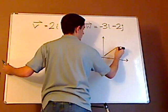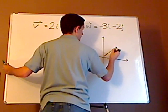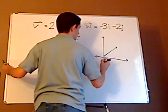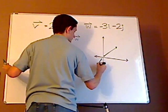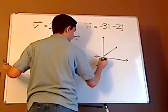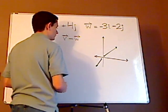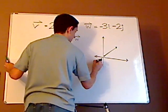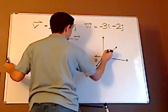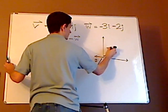and then you have the other vector, which is something like this. But what's going to happen, let's say this is w, vector w, and this is vector v.